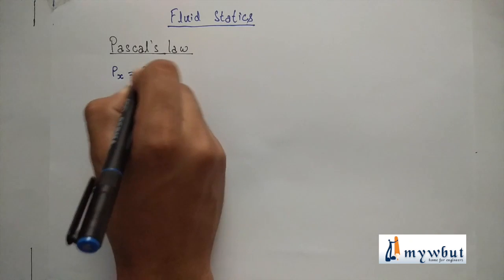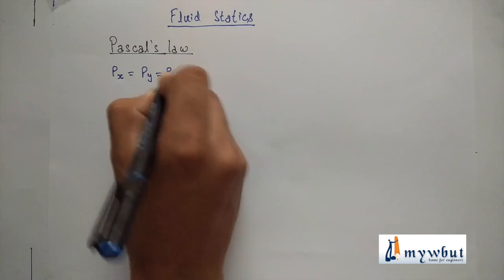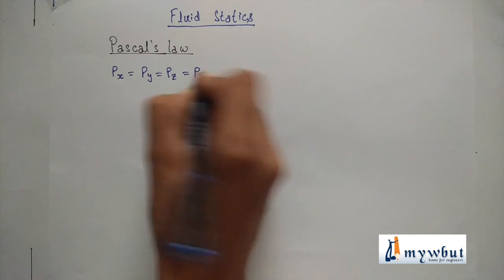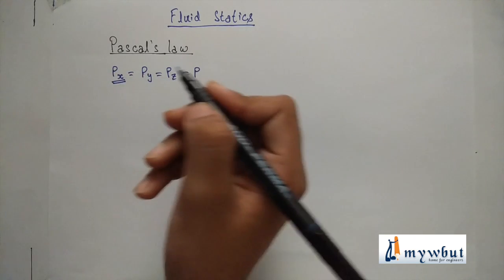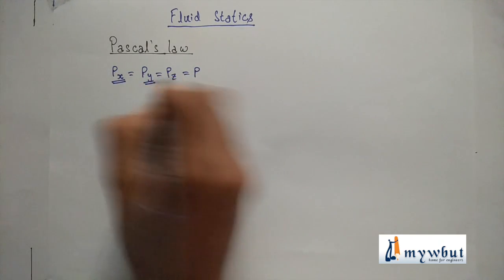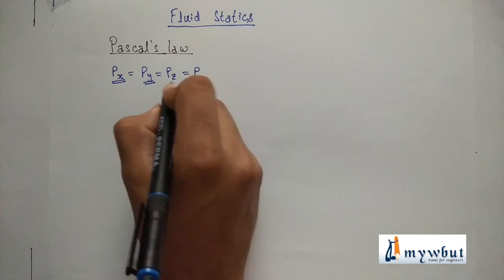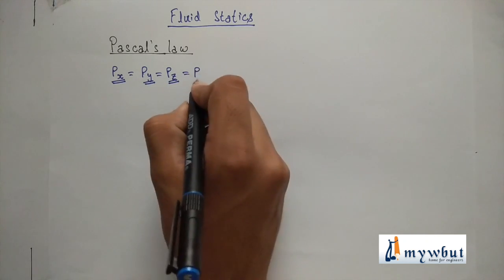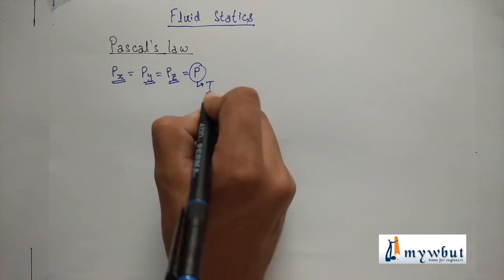That is P_X is close to P_Y is close to P_Z is close to P, where P_X is pressure along X direction, P_Y is pressure along Y direction, and P_Z is pressure along Z direction, and P is the total pressure.